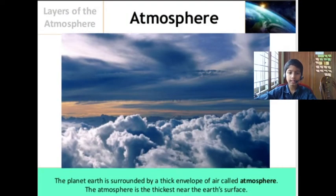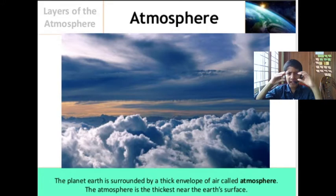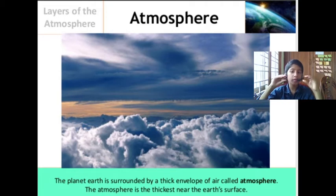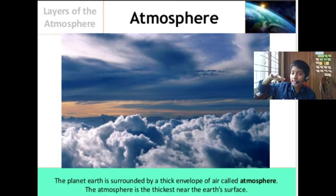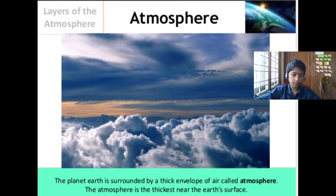The planet Earth is surrounded by a thick envelope of air called atmosphere. The atmosphere is the thickest near the Earth's surface, and the atmosphere is divided into five layers.